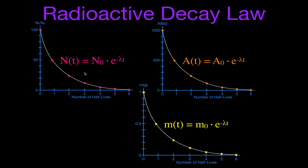All three of these equations are essentially the same exponential decay form — one uses the number of radioactive nuclei, one uses activity, and one uses mass. You can see this if you look at the graph of each one. Here I've made a graph showing what the typical decay curve looks like for number, activity, and mass — the graphs look exactly the same shape. Expressed as a percentage: start at 100%, after one half-life you have 50%, then 25%, then 12.5%, then 6.25%, and so on.